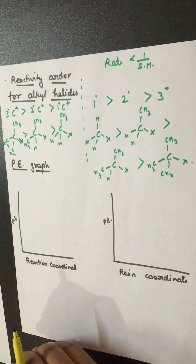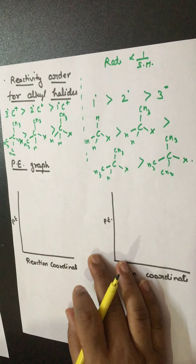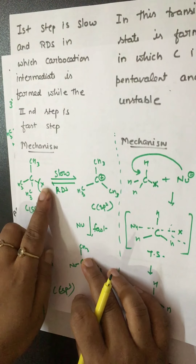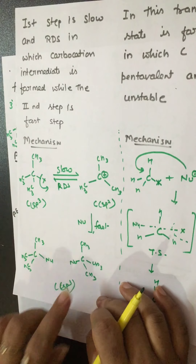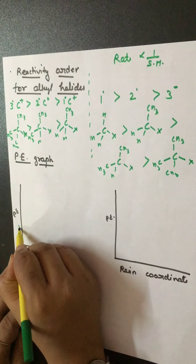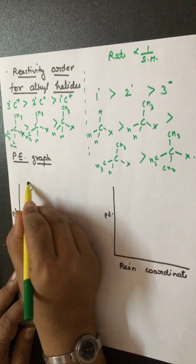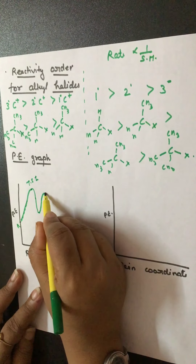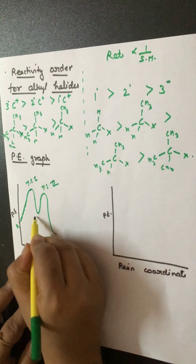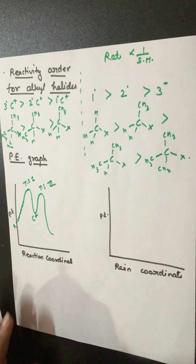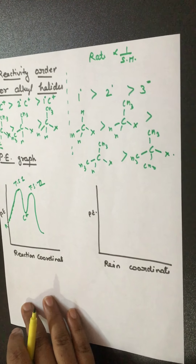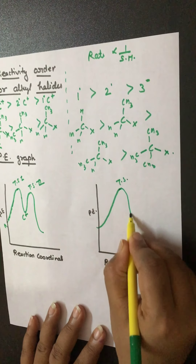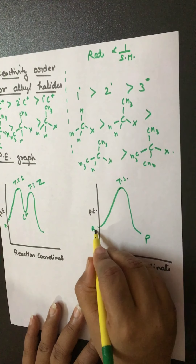Now the PE graph — potential energy graph. In case of SN1 reaction mechanism, 2 transition states are formed. In the first transition state, bond breaking takes place, and in the second transition state, bond making takes place. The transition state energy is higher than the reactant. So the graph shows: transition state 1, then the carbocation intermediate at lower energy, then transition state 2, and then the product. In SN2 reaction mechanism, only one transition state forms, and its energy is higher than the reactant. The product is then formed at lower energy.